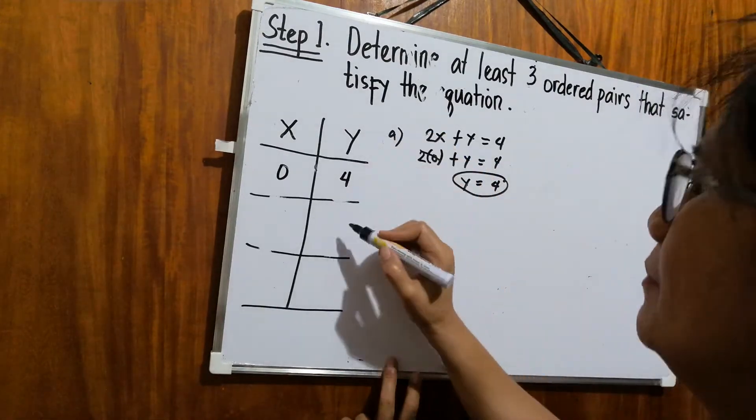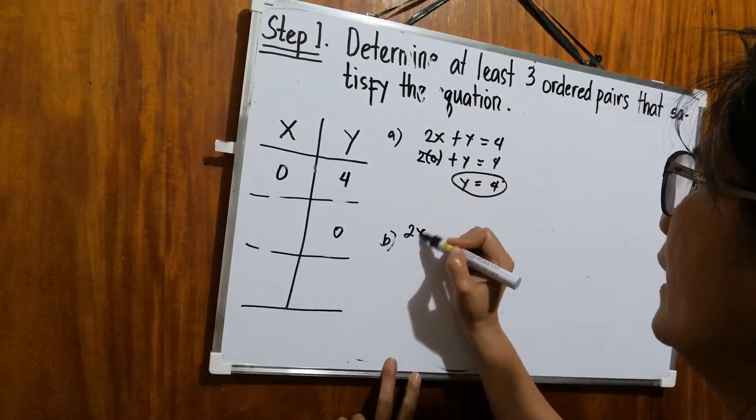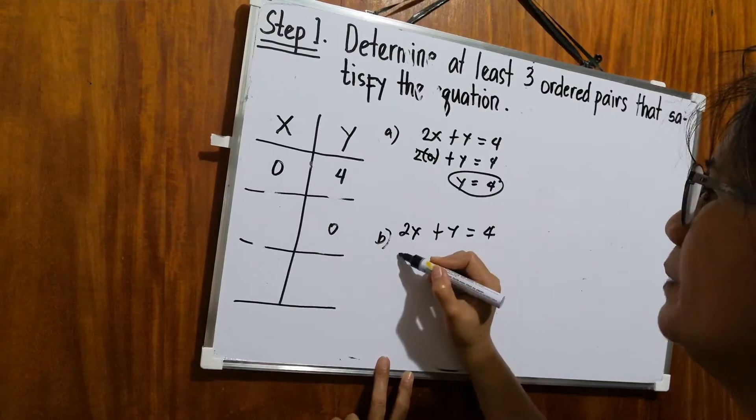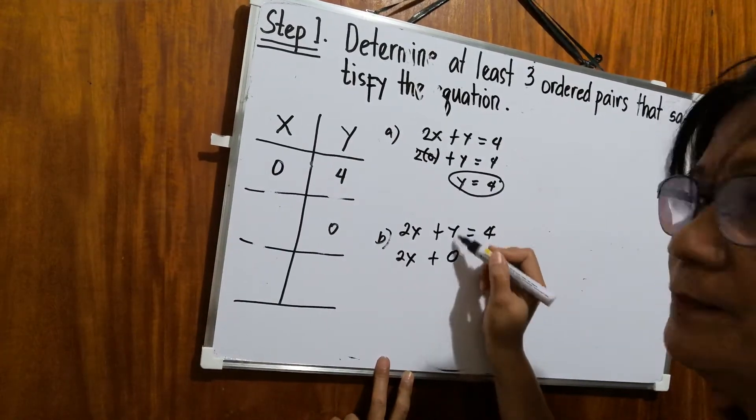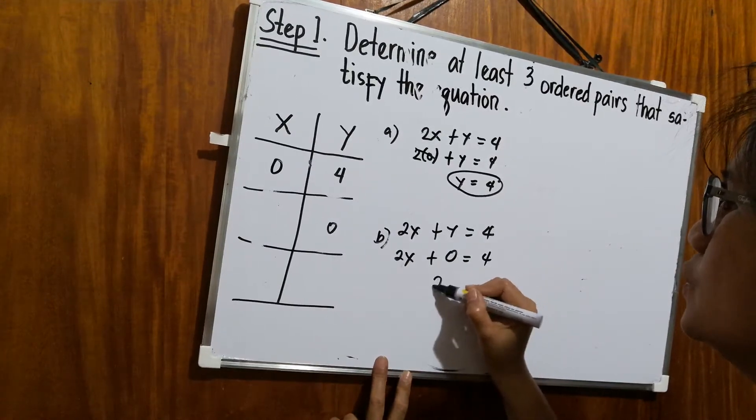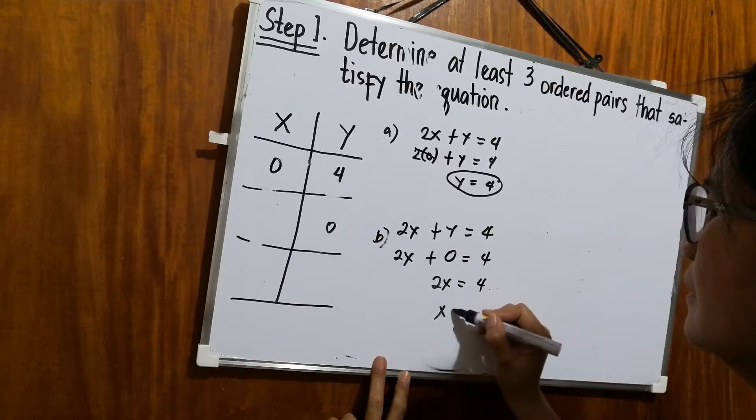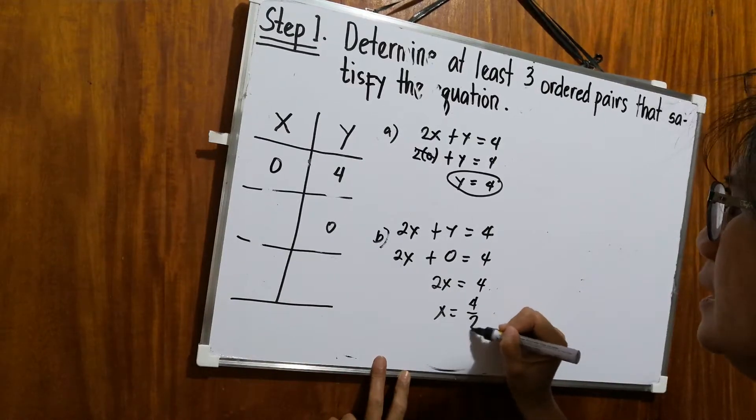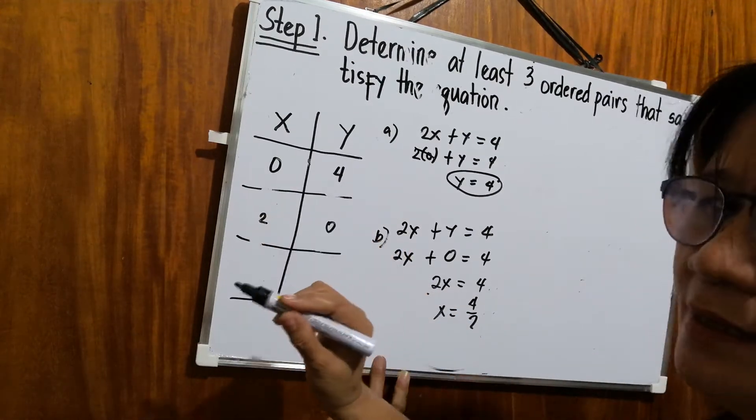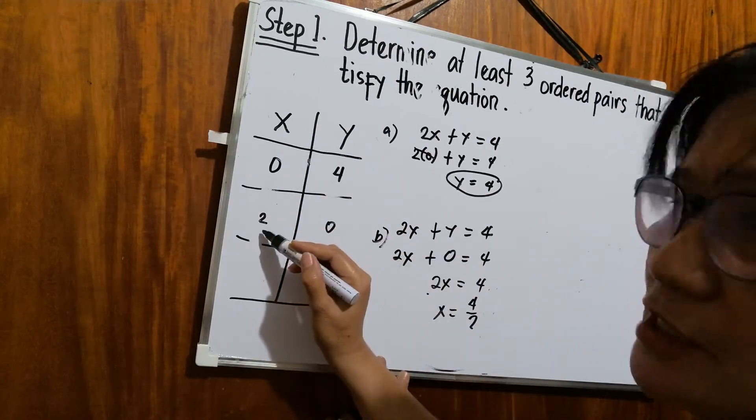How about if y is replaced with 0? So, what happened to 2x plus y equals 4? It will be 2x plus 0, replacing y, equals 4. Then 2x is equal to 4. To find x, we will divide 4 by 2. So the value of x is positive 2. Again, if y is 0, then the value of x in this equation is 2.